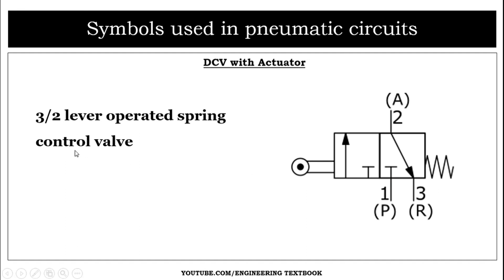Next is the three-by-two lever operated spring return control valve. It again has three ports and two positions. When we press the lever, the valve gets activated, and when we release it, the compressed spring releases and the valve returns to its original unactuated position.